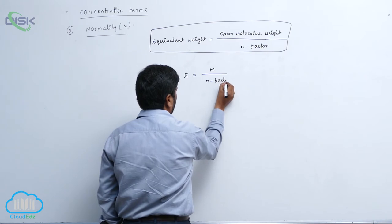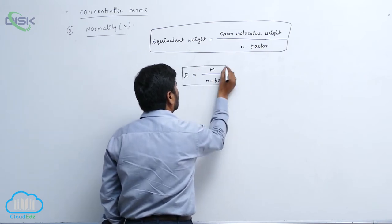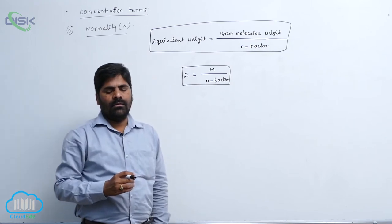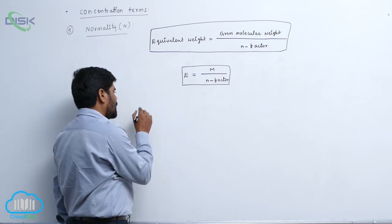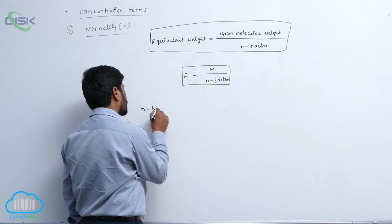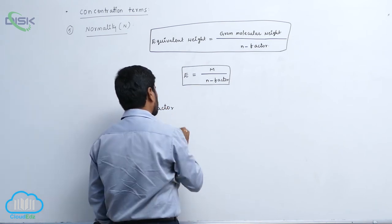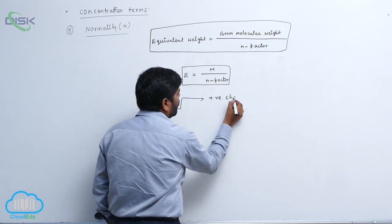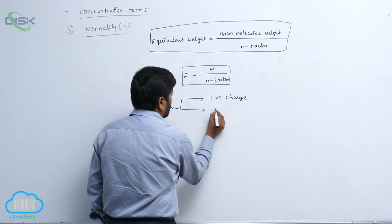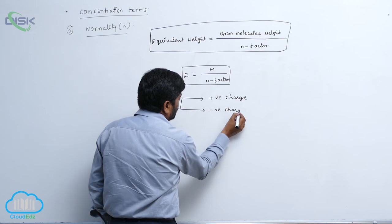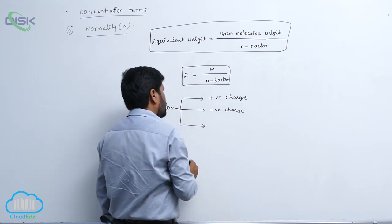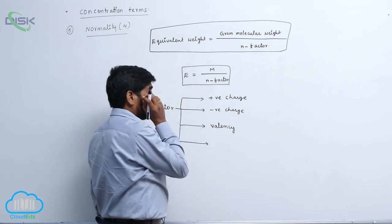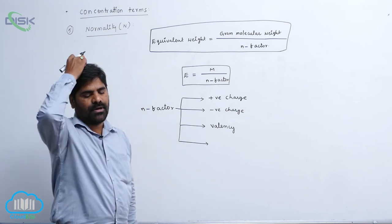Which factor? The n factor. The n factor may be valency. This n factor equals to the total positive charge or the total negative charge, or valency.